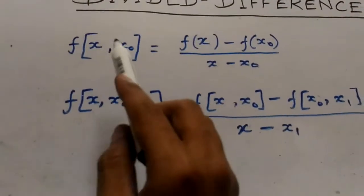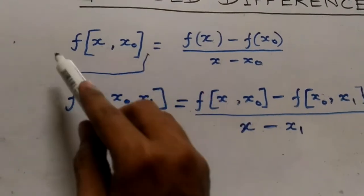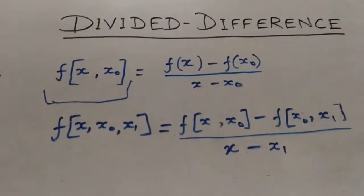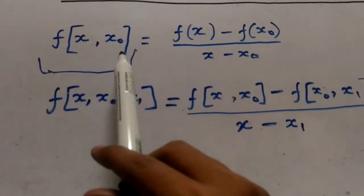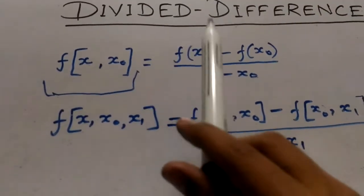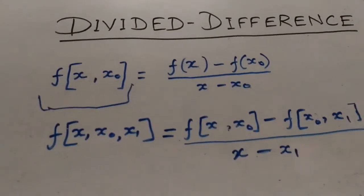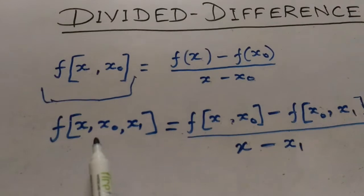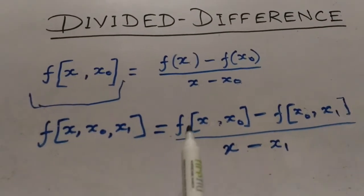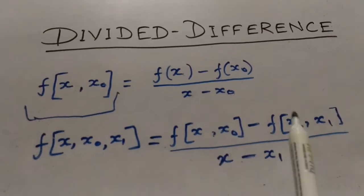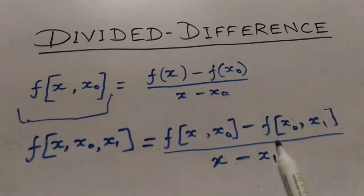Divided difference is denoted by this kind of notation. f(x, x0) equals f(x) minus f(x0) divided by x minus x0. Similarly, f(x, x0, x1) equals f(x, x0) minus f(x0, x1) divided by x minus x1.